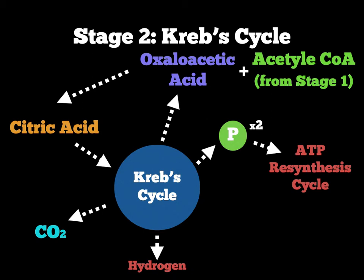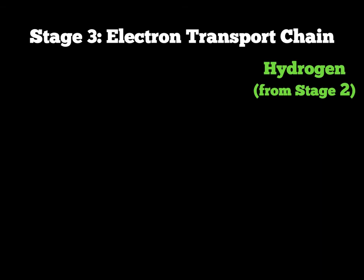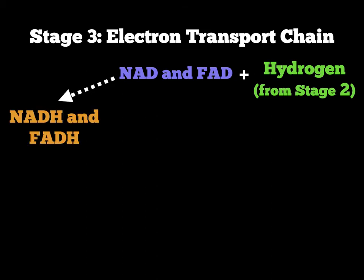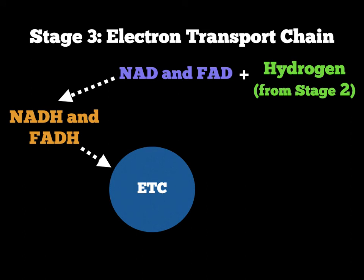Once we have the hydrogen from the Krebs cycle, the body can initiate stage 3 of the aerobic system, which is called the electron transport chain. You are permitted in the exam to write this as ETC. The hydrogen from stage 2 is added to two molecules called NAD and FAD. If we add hydrogen to NAD and FAD, you simply add H's to the end — giving us NADH and FADH. When we have NADH and FADH, this enters the electron transport chain.